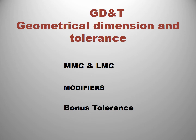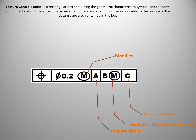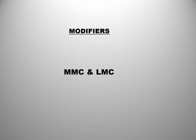The remaining topics are MMC and LMC, which are part of modifiers and bonus tolerance, as well as primary datum, secondary datum, and tertiary datum. So in this video we are going to discuss modifiers. In modifiers, there are two main topics: MMC and LMC, and bonus tolerance.